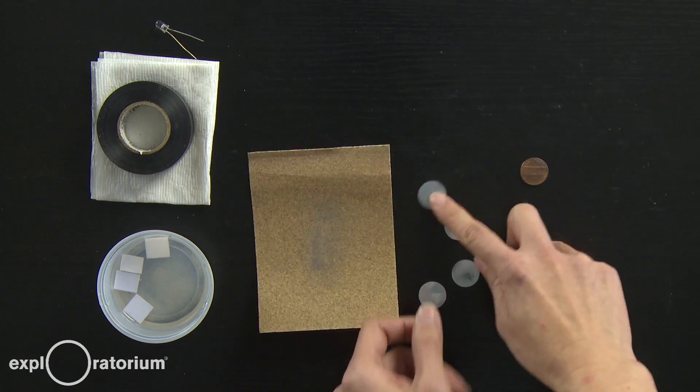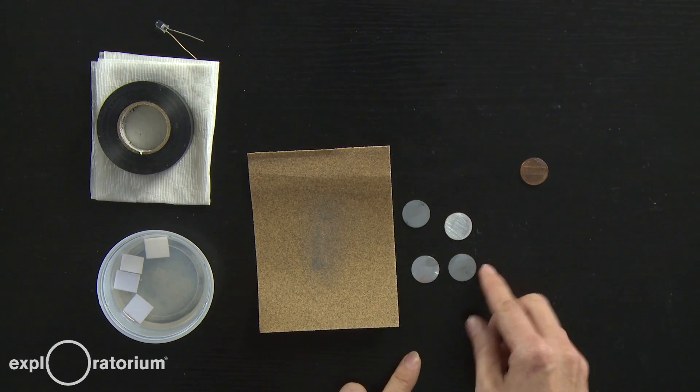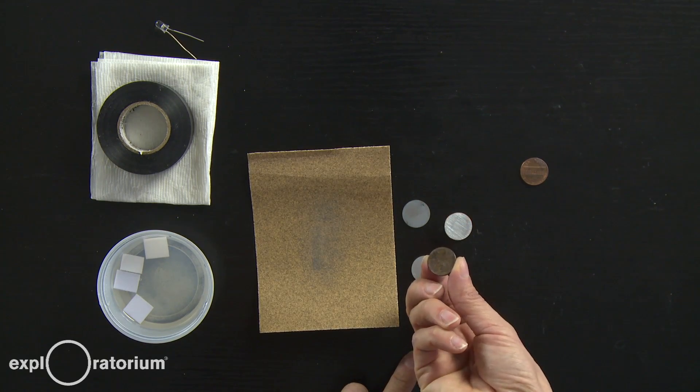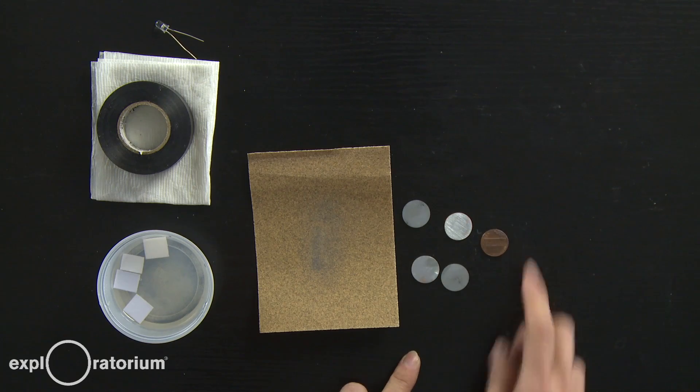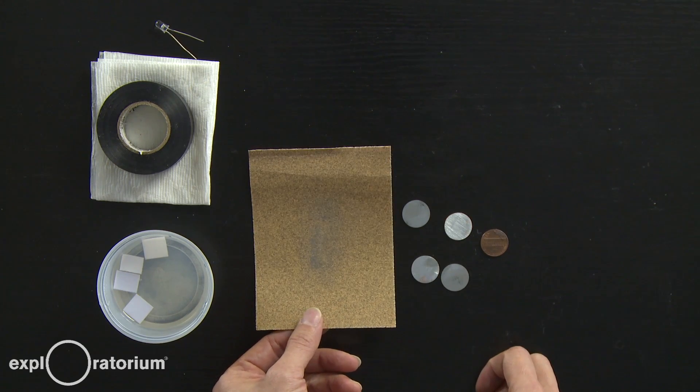Once you have that fourth penny sanded, you'll have four pennies that have zinc on one side, copper on the other, and then that fifth intact penny. And you'll be ready to start building your cell.